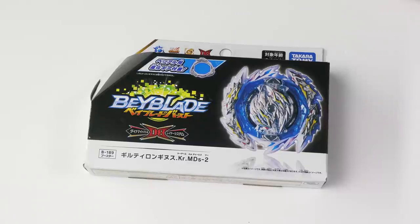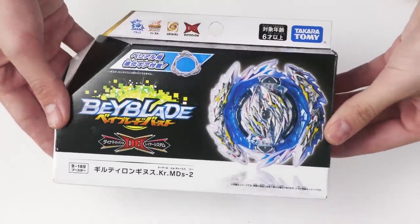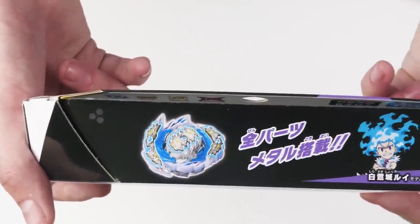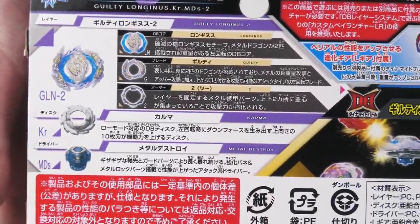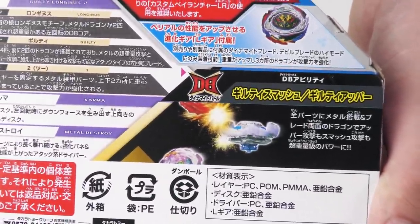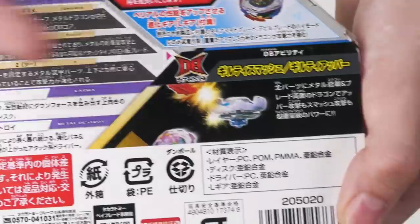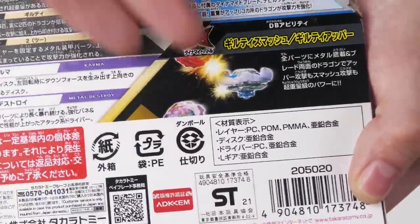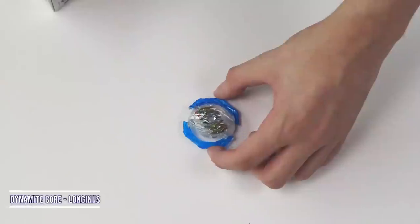Hello everyone! For this video we will be reviewing the B-189 Guilty Longinus Karma Metal Destroy 2, a new Longinus. Very excited to take a look at it. The main advertisement is all the metal on it. Just to show the back, we do get some interesting stuff. Basically its gimmicks are just to hit hard really. Upper attack, the disc can hit you, it has a very cool shape, and you know, upper attack, you get the idea.